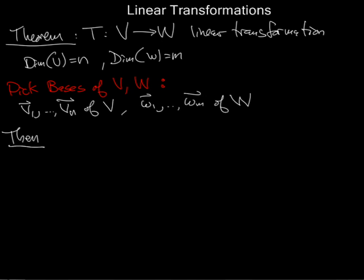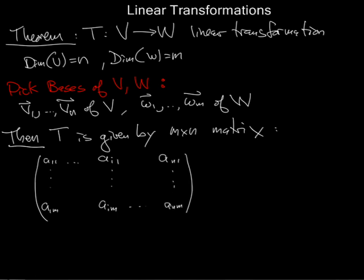And once you've done that, then the linear transformations from V to W are given by n by m matrices. The way you find a matrix corresponding to your given linear transformation is you fill in the columns. The i-th column of the matrix is the coordinates of T applied to the i-th basis vector, which is to say T of Vi is a given linear combination of the Wj's.